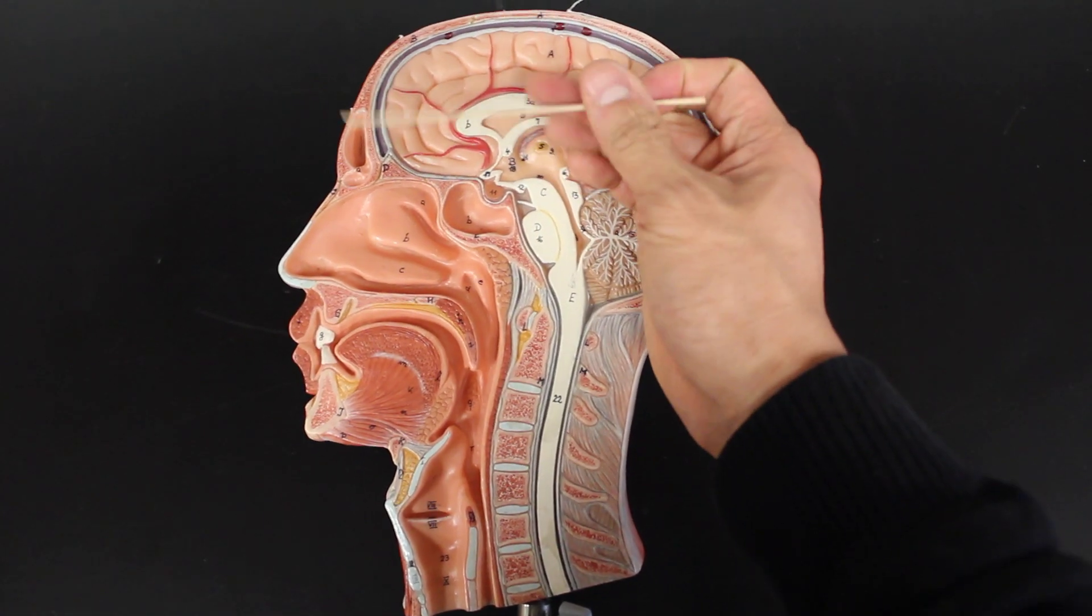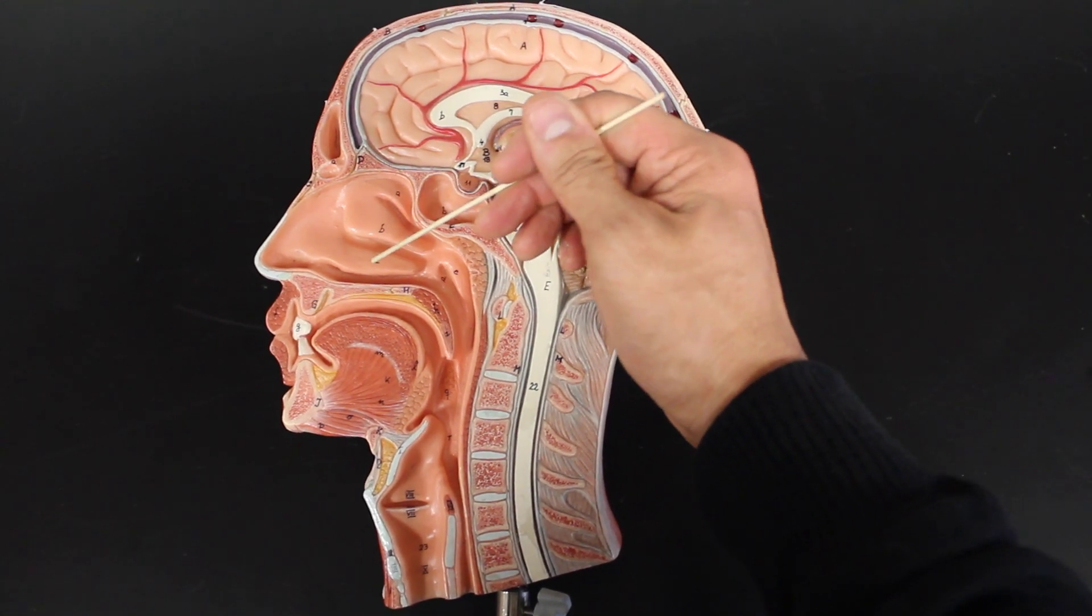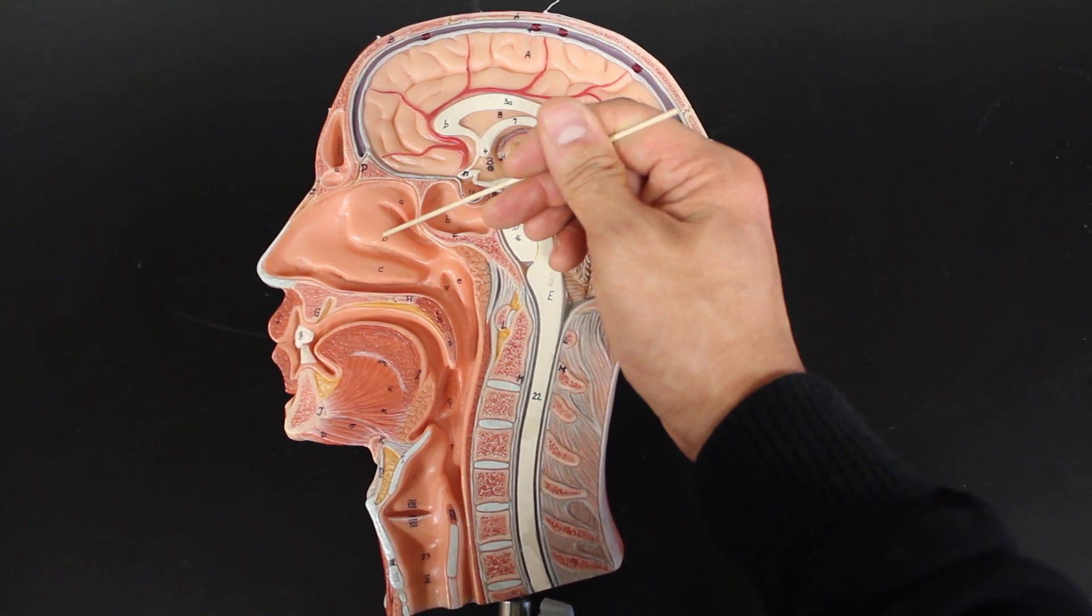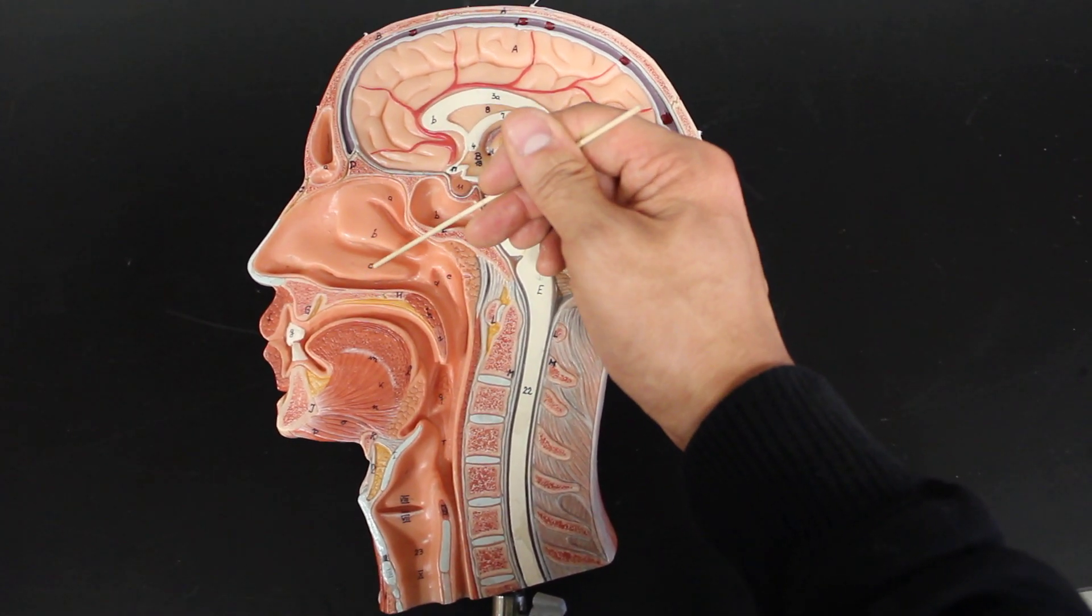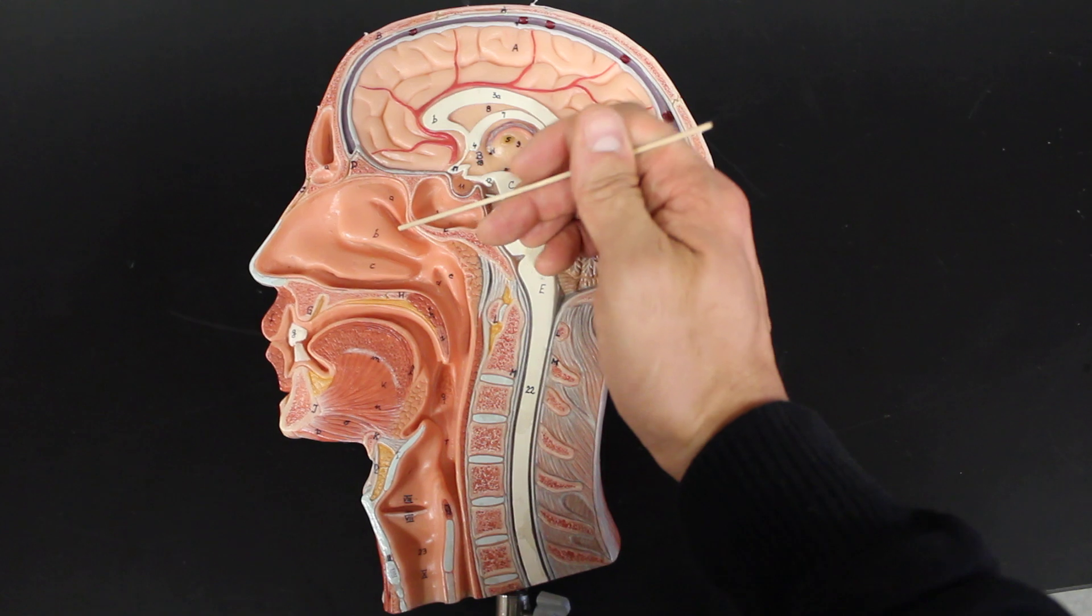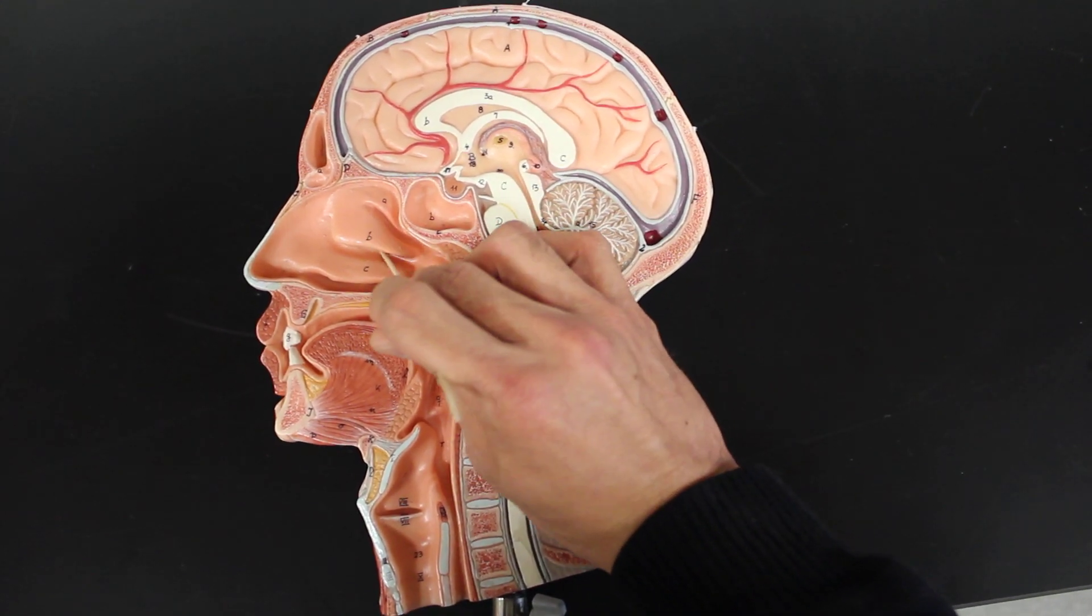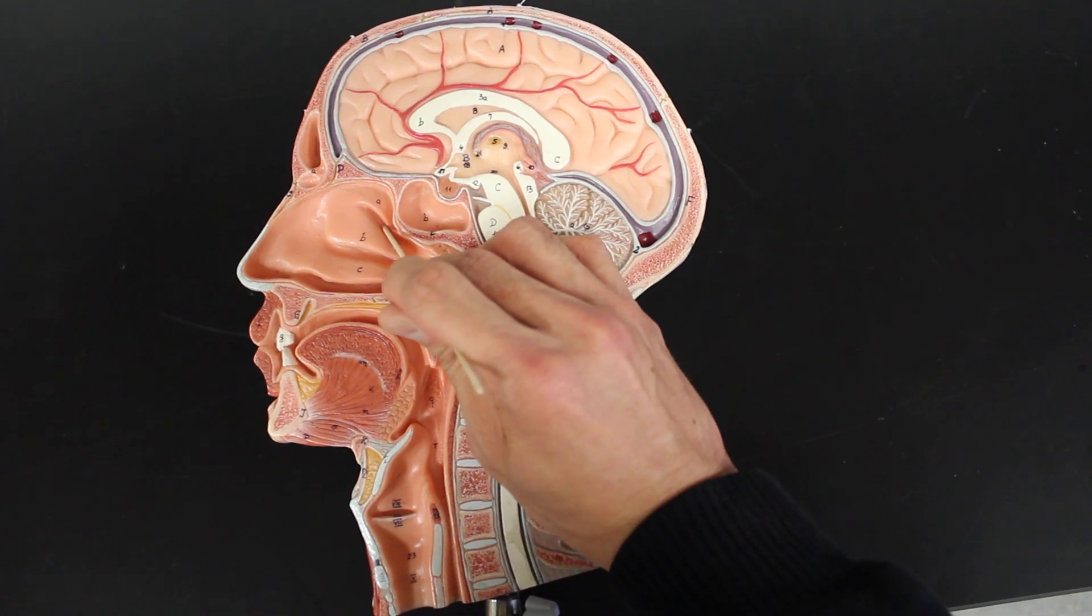What you'll find is the nasal cavity having three major structures coming off of the wall: nasal conchae. You'll find the superior nasal concha, the middle nasal concha, and the inferior nasal concha. And underneath them, if you were able to break these off, you'd find a little small hole.